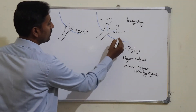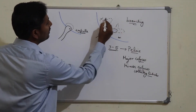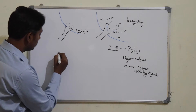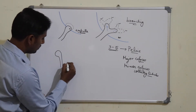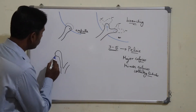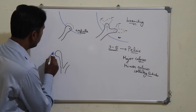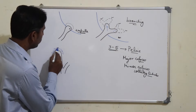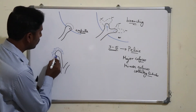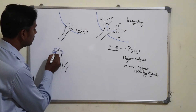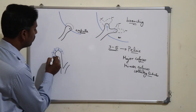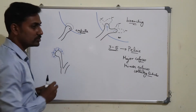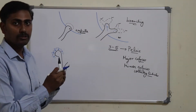Let us look at what happens to the metanephros. The growing tip, or the divisions or branches of the ureteric bud, will again become enlarged to form the ampulla. The portion of the metanephros surrounding this growing tip of the ureteric bud will get differentiated and will form the nephron. This differentiation of the metanephros is under the influence of the ampulla or the growing tip of the ureteric bud.